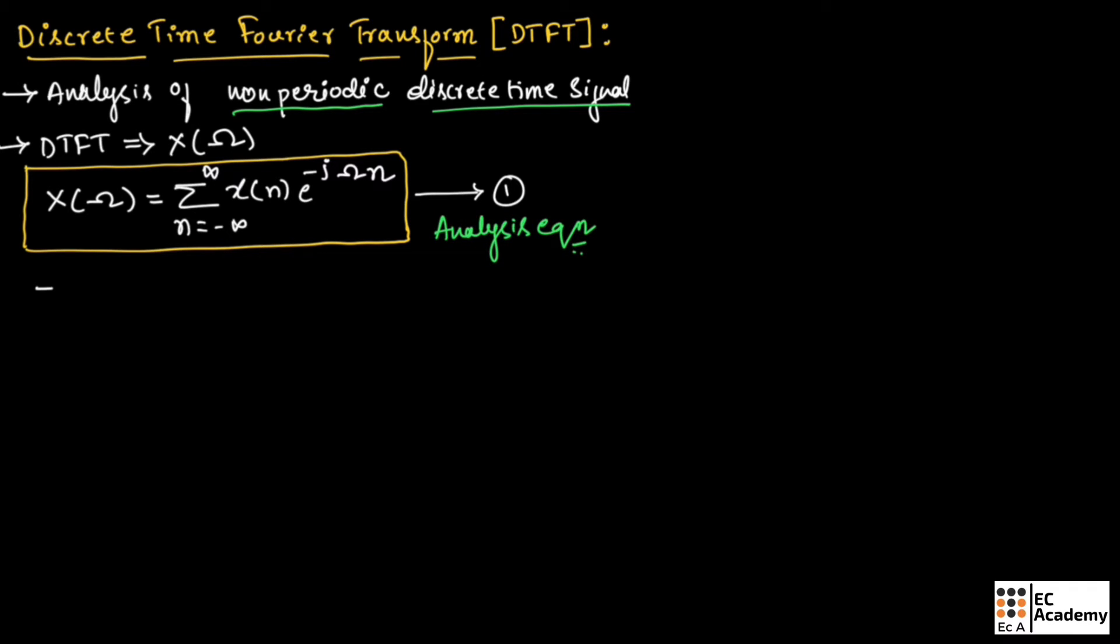Here, omega is the frequency of the discrete time signal and X of omega is also known as the spectrum of the discrete time signal.